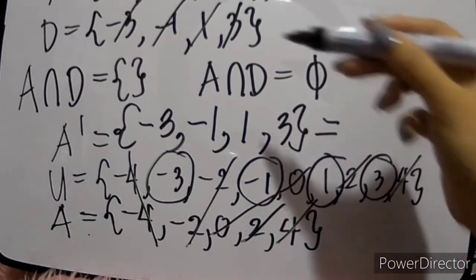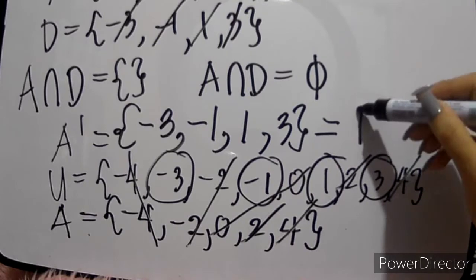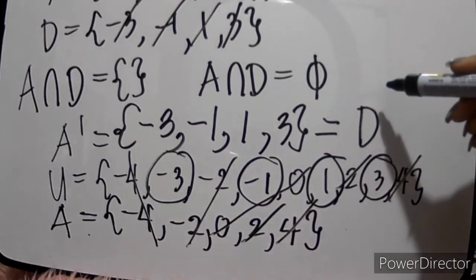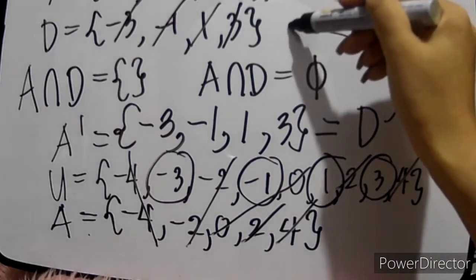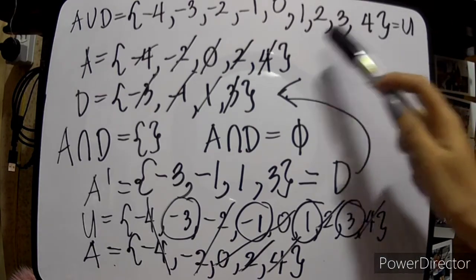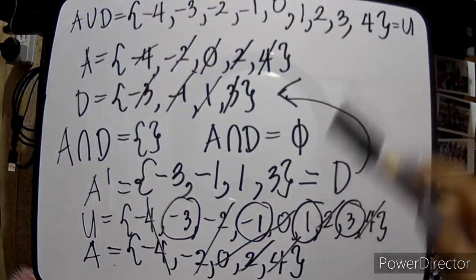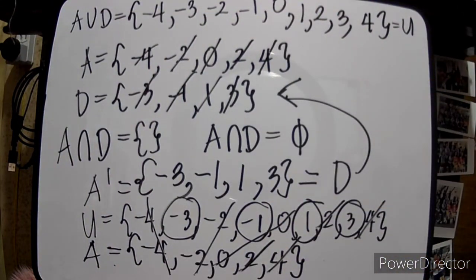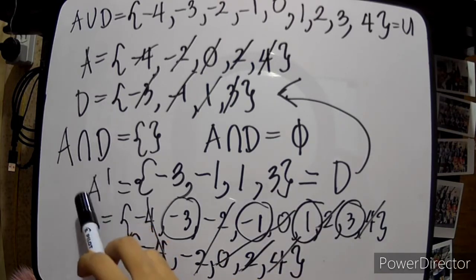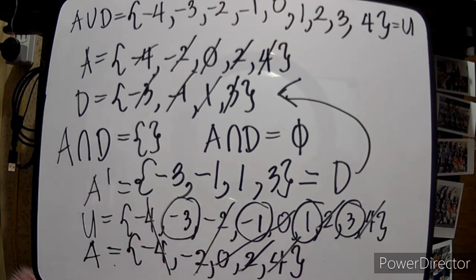So, to summarize: for union, you combine the given sets; for intersection, you find what they have in common; for complement, you take the universal set and subtract the elements of the set being complemented.